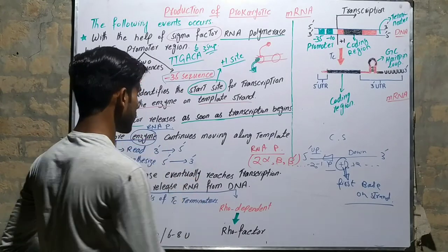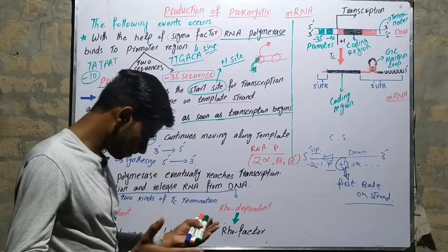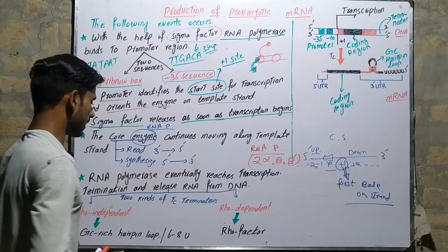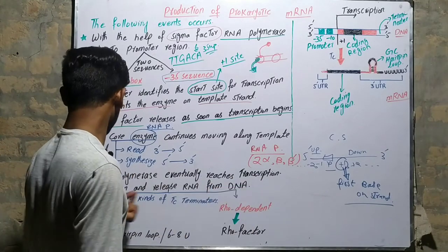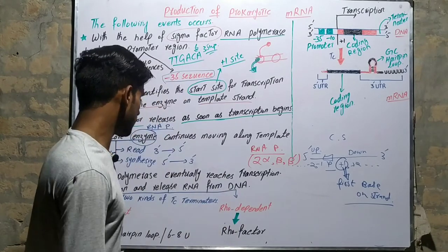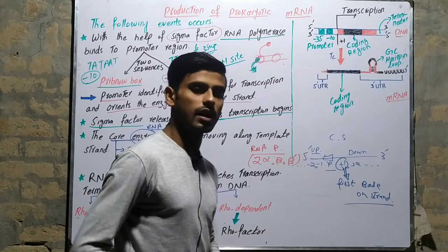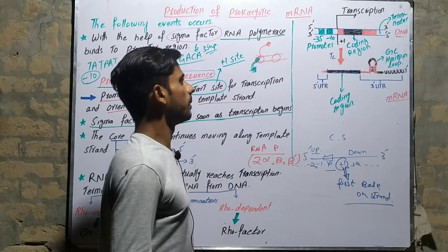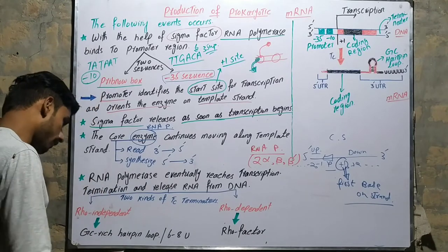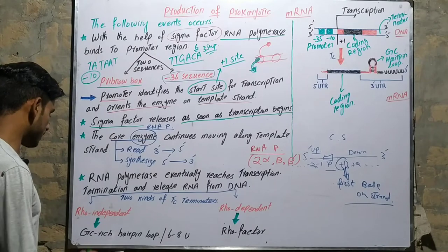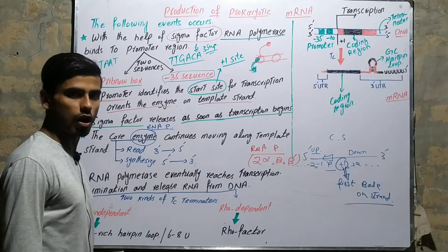There are two kinds of transcription terminators in prokaryotes. The first is Rho-independent termination and the second is Rho-dependent termination. In Rho-independent termination, a GC-rich hairpin loop is formed, followed by a sequence of 6 to 8 uracil residues.